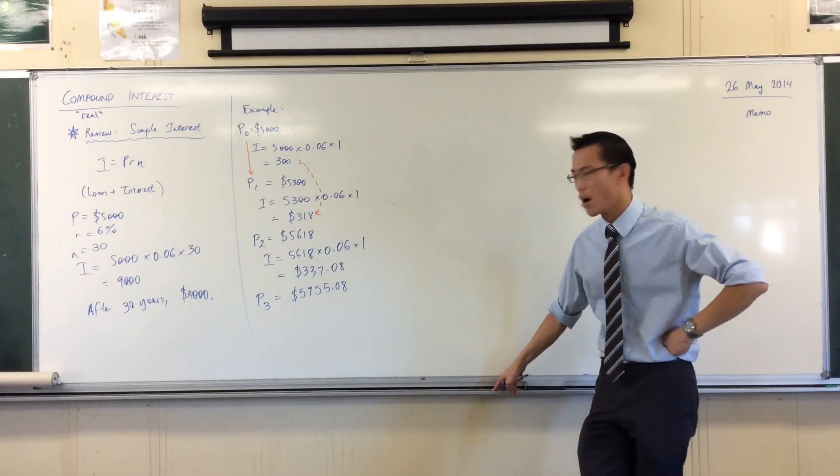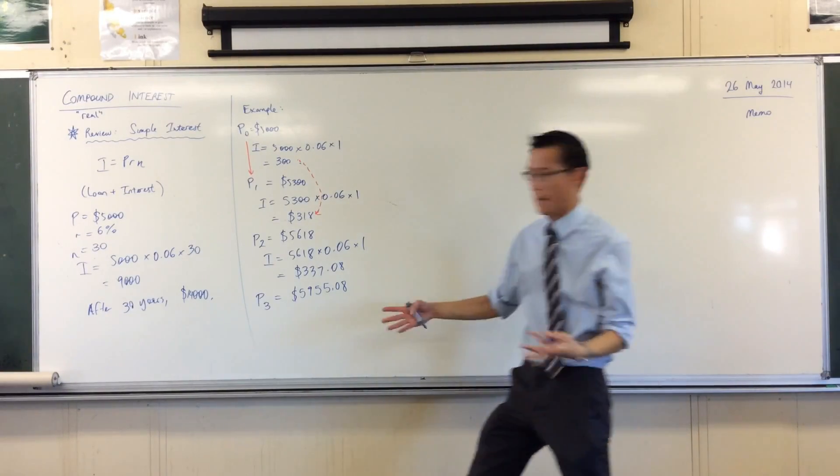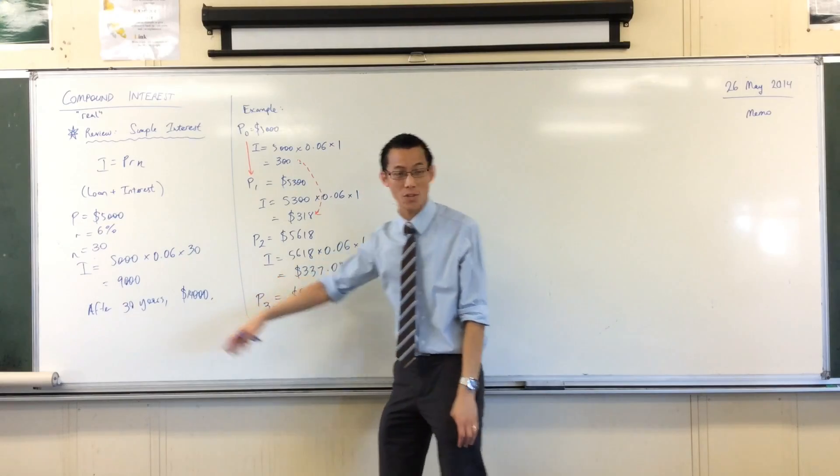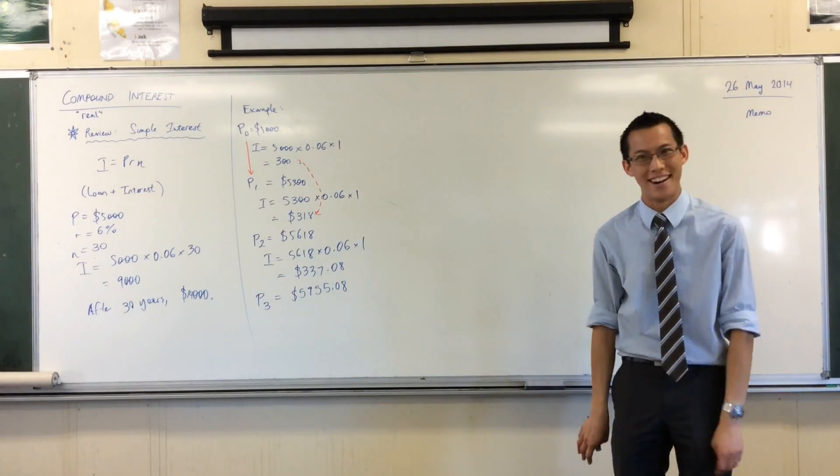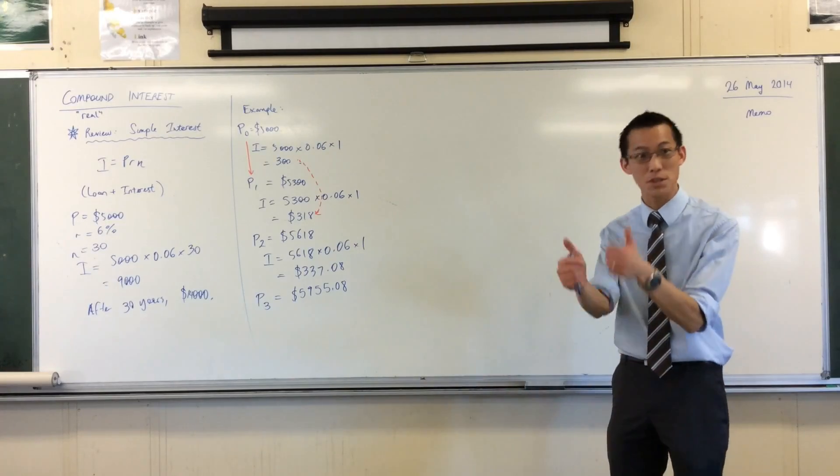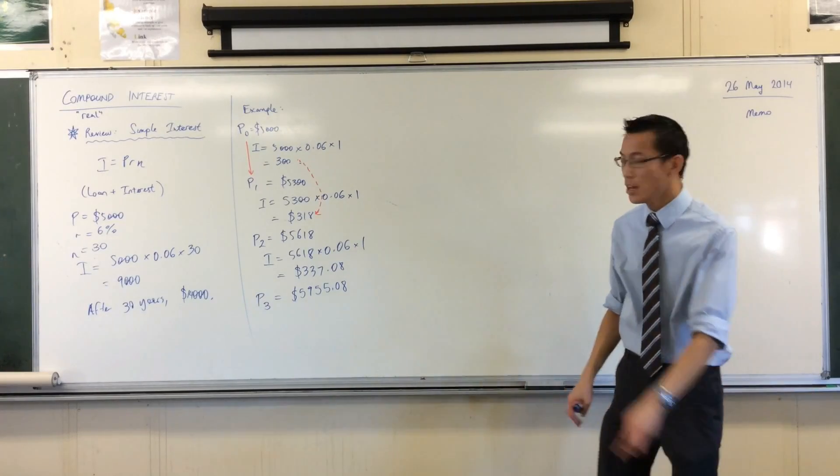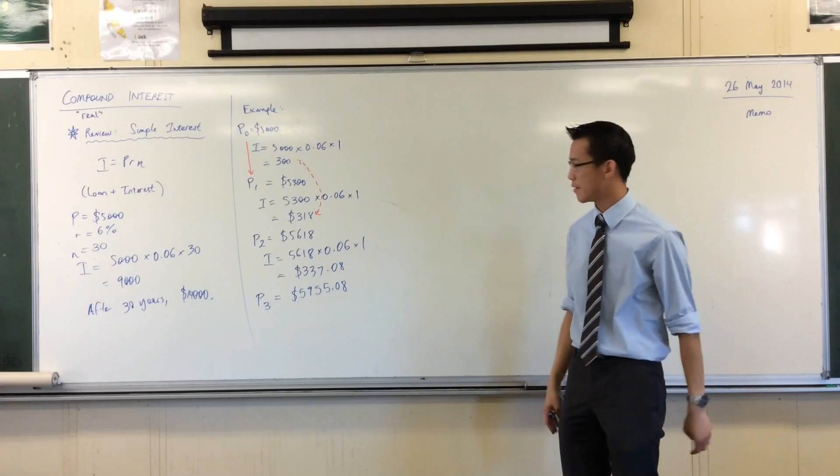Okay, so you can see this thing is growing now. I want to know how much I get after 30 years, right? I could do this 30 times, but it's taking forever. It's literally like, you're just punching in the buttons, takes a long time. So I want a faster way.